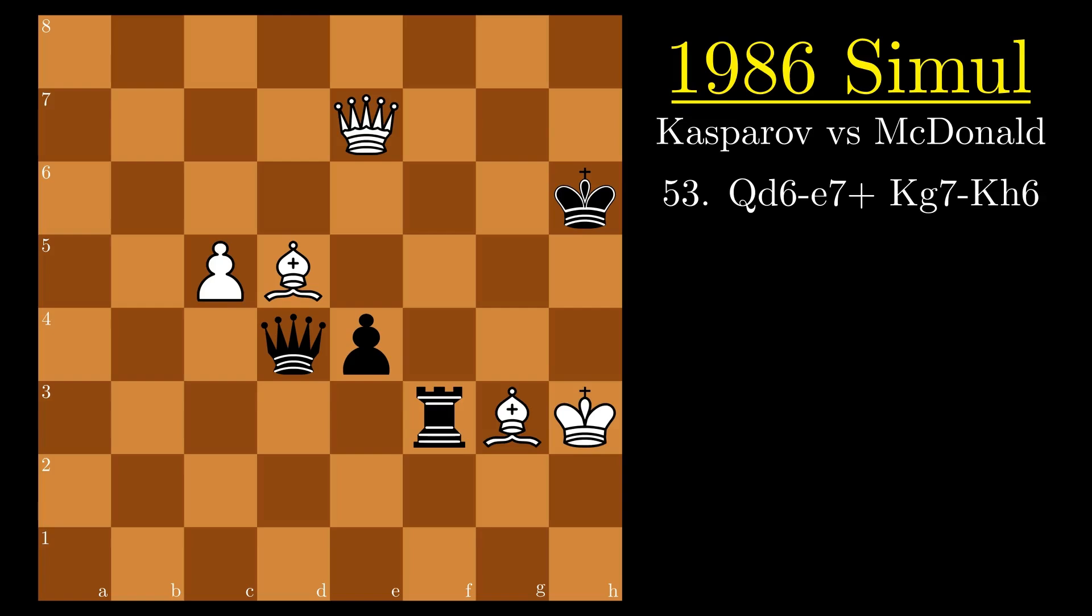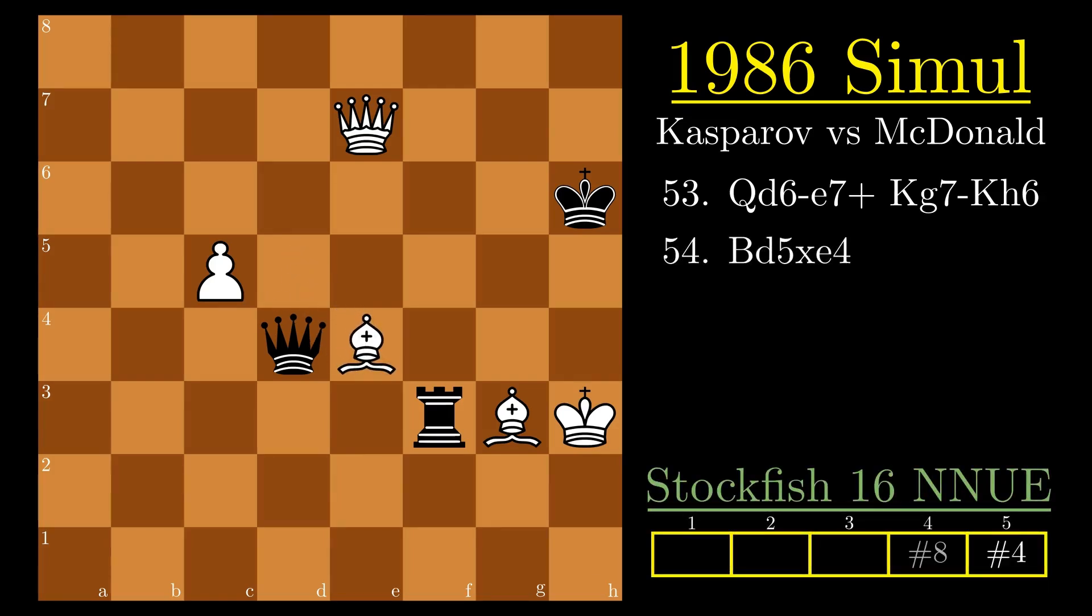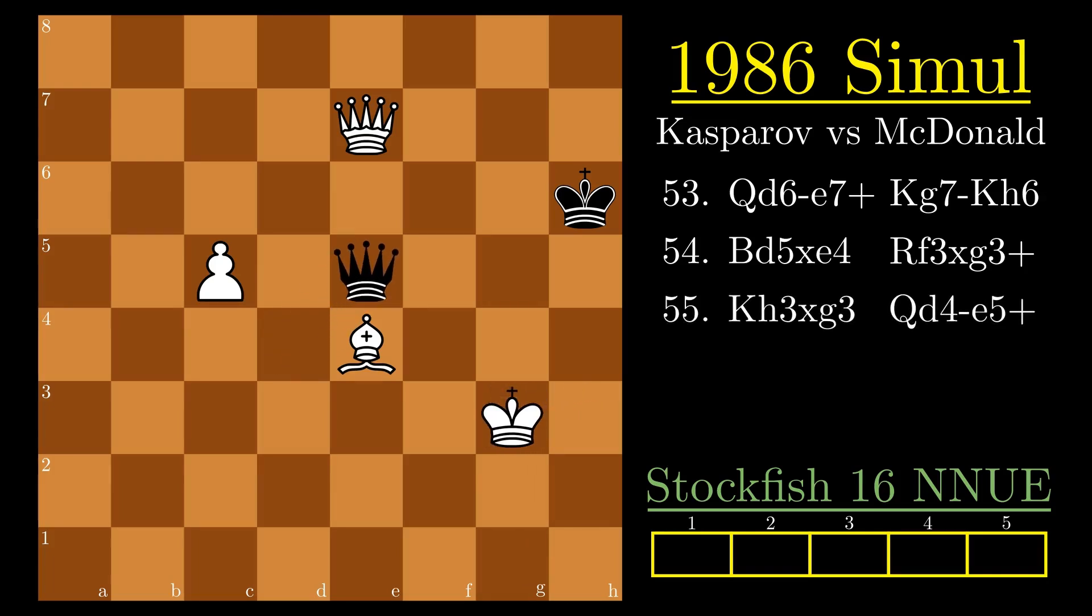Take this position from an exhibition involving Gary Kasparov in 1986. He is winning against Neil MacDonald until he plays bishop captures e4. Out of the top five engine lines, black is still facing checkmate except in one. By playing rook captures g3 check, the white king will capture and black will respond with queen e5 check.